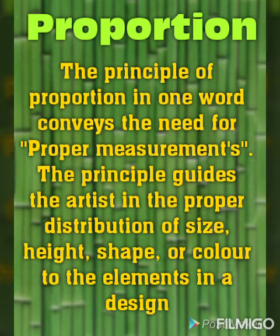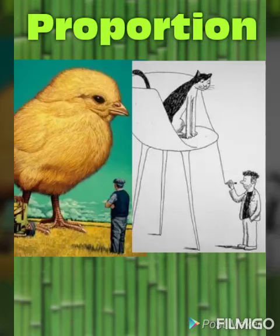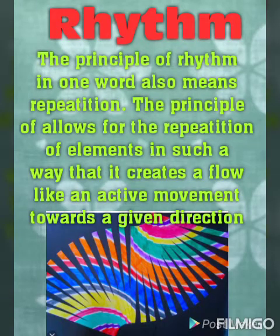Proportion: the principle of proportion conveys the need for proper measurement. It guides the artist in applying proper height, size, color, or shape to elements in a design. For example, one cannot draw a chicken bigger than a man, or draw an ant bigger than a house — that drawing would not be in proper proportion.